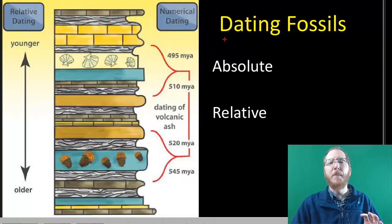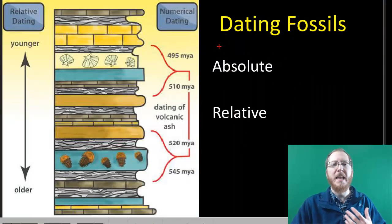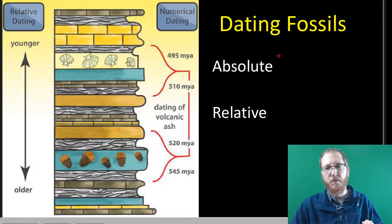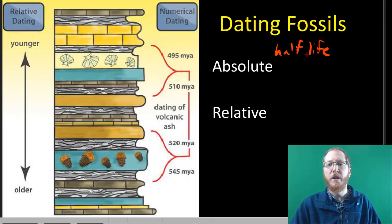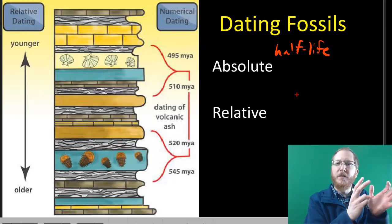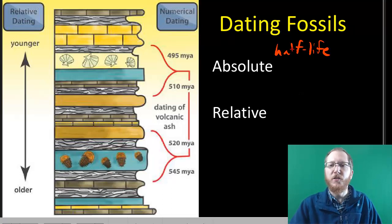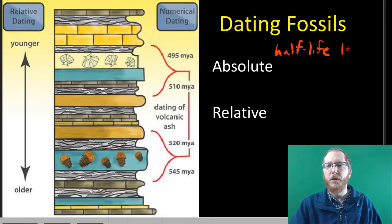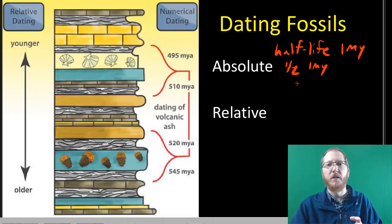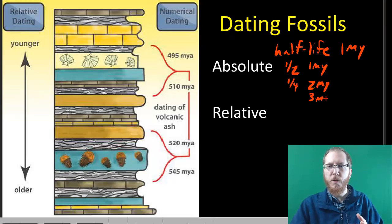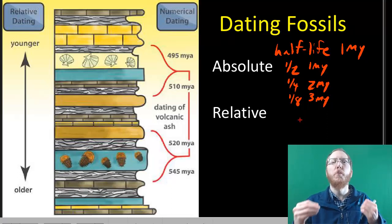For dating fossils, there are two common methods. The first is absolute dating, where we look at volcanic ash or rocks containing radioactive isotopes that break down into a daughter isotope. We analyze how much radioactive isotope remains versus how much daughter isotope has formed. Because each radioactive isotope decays at a different rate, we use the half-life to calculate the rock's age. For example, if the half-life is one million years, one half remaining means it's one million years old; a quarter remaining means two million years old, and so on.